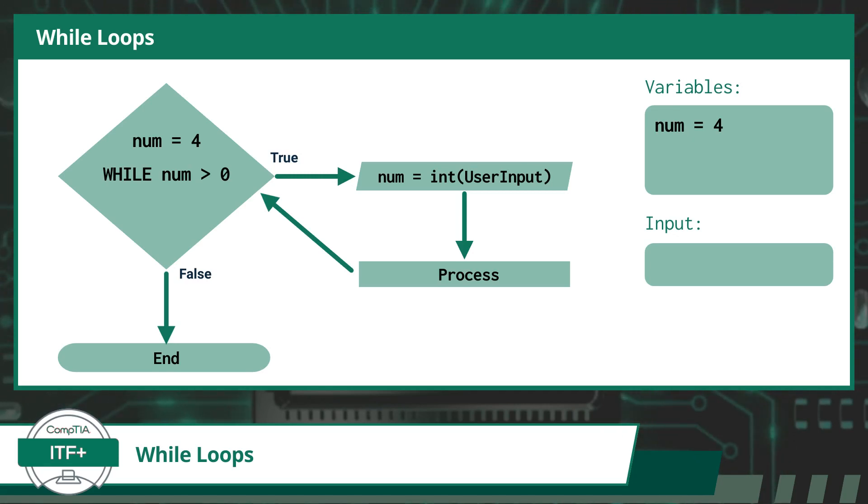We will now take a closer look at the decision portion of this while loop. A while loop starts with a condition check. Before entering the loop, the condition specified in the while statement is evaluated. If the condition is true, the code inside the loop is executed. If the condition is false from the start, the loop will not be executed at all.